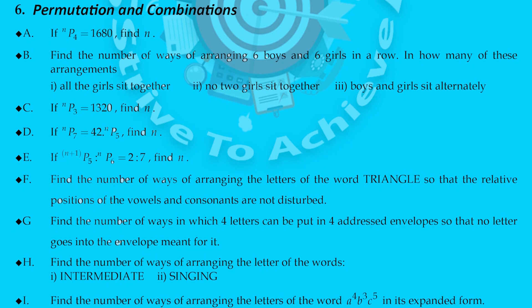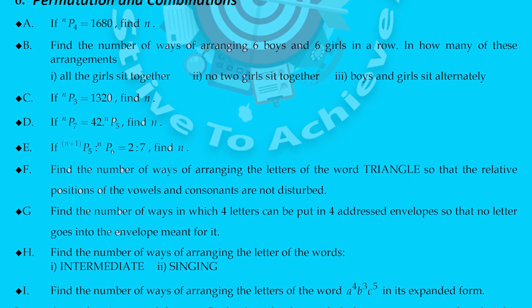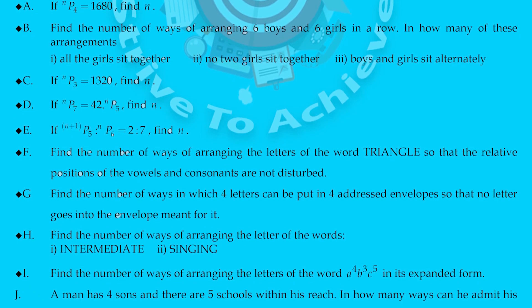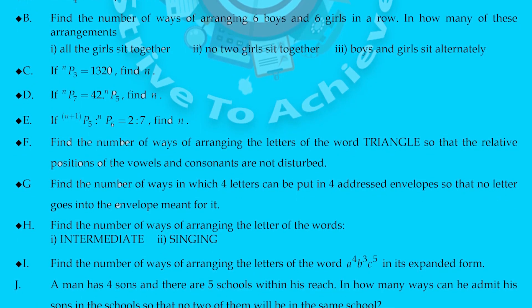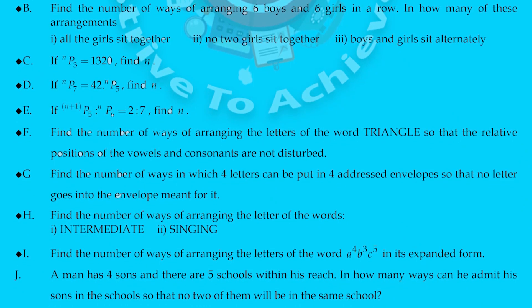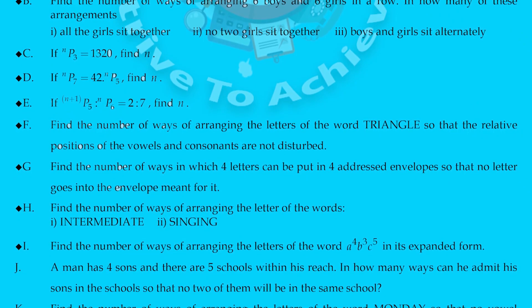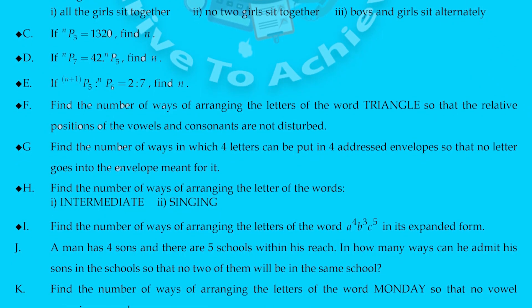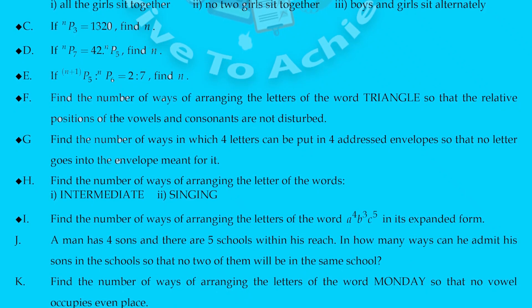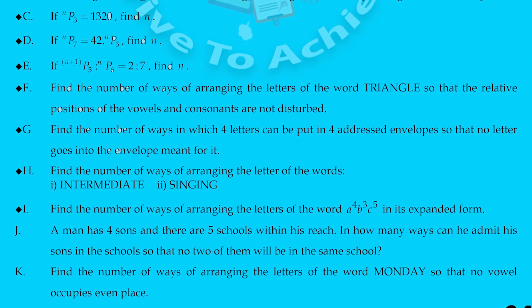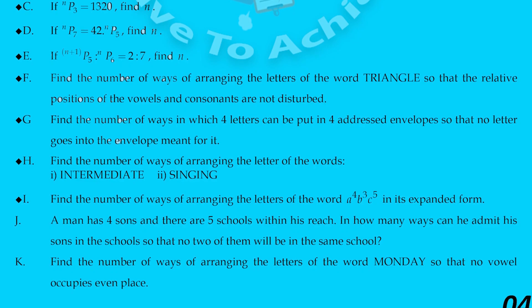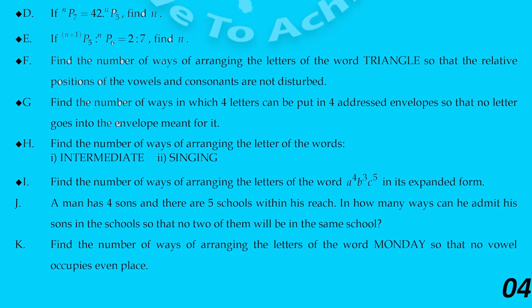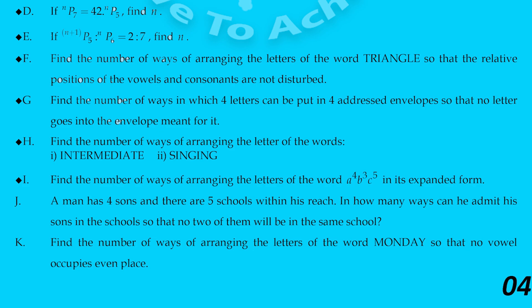Next is permutation and combination. This is the only chapter that is very famous for VSAQs and SAQs. Most students know that no LAQ question will be asked from permutation and combination — only VSAQs and SAQs give you maximum marks: 2 VSAQs and 2 SAQs. I have marked very important questions on page number 4, A to K. Practice each and every question to get maximum marks.